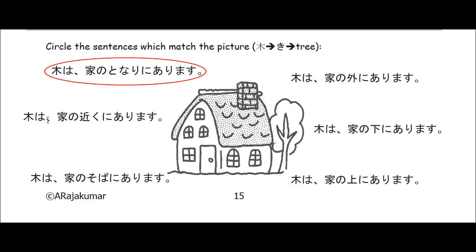Let's go on and have a look at this: ki wa, as for the tree, ie — that can actually be pronounced either ie, house, or uchi, home. It doesn't matter which one you use. So let's use ie, house. Ie no chikaku — chikaku, we can see, is close to. So close to of the house, close to the house. Ni — that's our location particle, which we need if we're using arimasu in the sentence. And arimasu means it exists. So as for the ki, the tree, it exists or it is close to the house. It's close to the house, so it should be circled. Second one, that's correct.